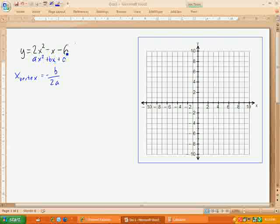where c is the last constant, b is the number in front of the x, and a is the number in front of the x squared.